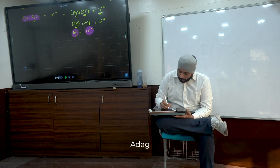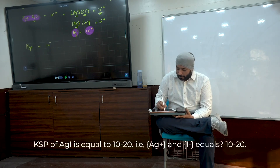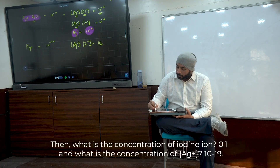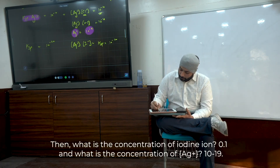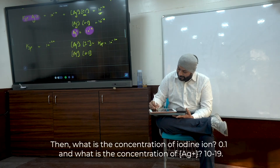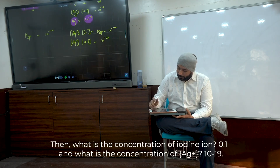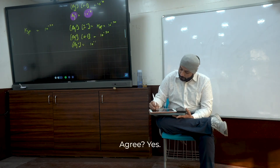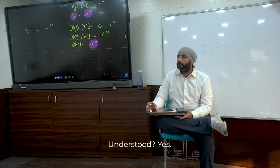Sure. Similarly, for AgI: K equals 10⁻²⁰. The concentration of I⁻ is 0.1. Ag⁺ equals 10⁻²⁰ divided by 0.1, which equals 10⁻¹⁹. Agreed? Yes. Understood? Yes.